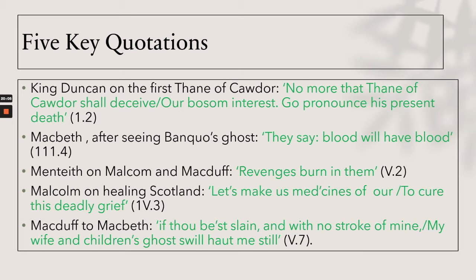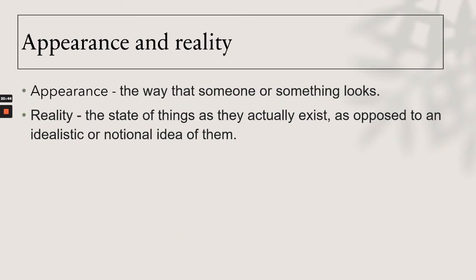Malcolm attacks Macbeth's castle and claims the throne in the belief that his revenge will heal the wounded Scotland. Macduff avenges his family's murders by killing Macbeth, fulfilling the witches' prophecies. Five key quotes: King Duncan on the first Thane of Cawdor — 'No more that Thane of Cawdor shall deceive our bosom interest; go pronounce his present death.' Macbeth after seeing Banquo's ghost — 'They say blood will have blood.' Menteith on Malcolm and Macduff — 'Revenge is burning in them.' Malcolm on healing Scotland — 'Let's make us medicines of our great revenge to cure this deadly grief.' Macduff to Macbeth — 'If thou best slain and with no stroke of mine, my wife and children's ghosts will haunt me still.'